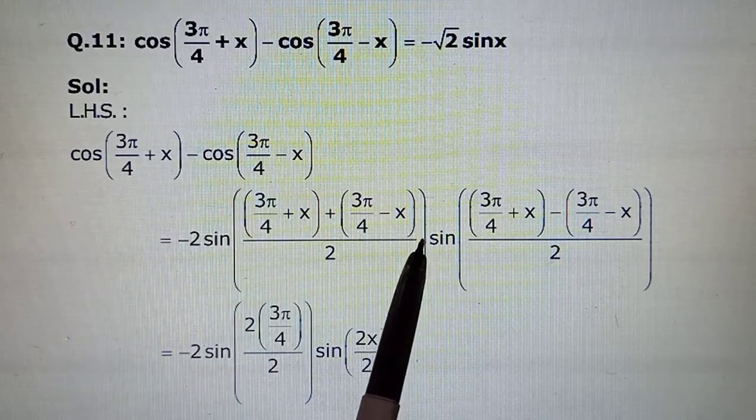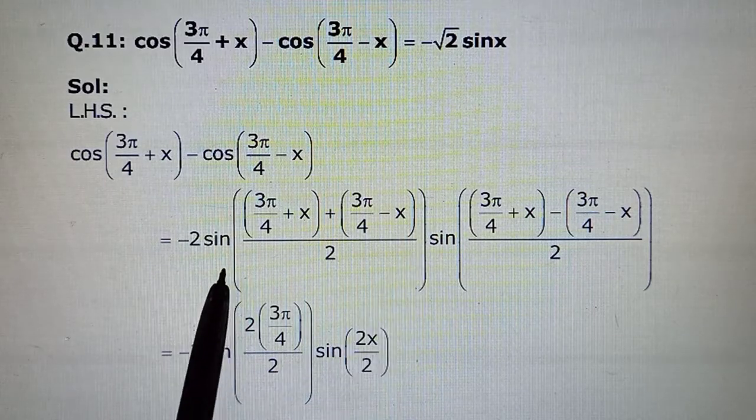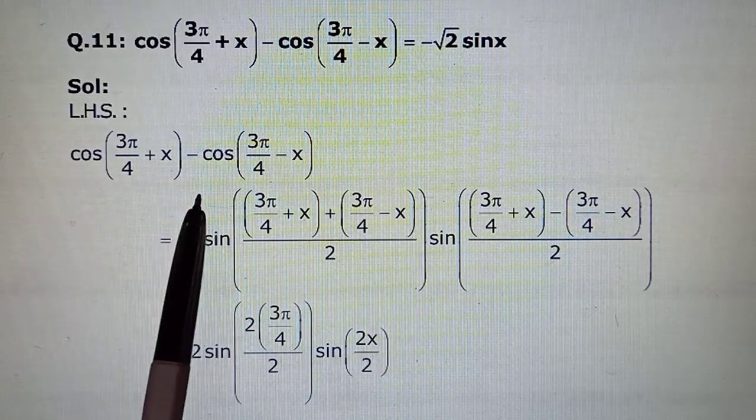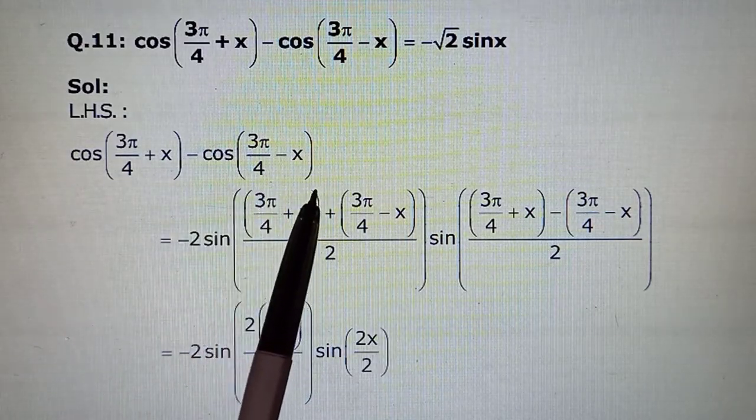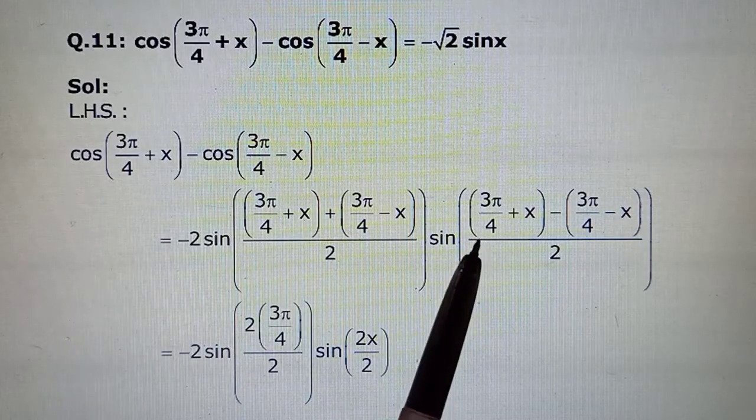We have seen that when the formulas of cos are plus, both the terms are of cos cos, and minus both terms are of sin sin. Whereas when sin C plus minus sin D, there is one cos term and one sin.